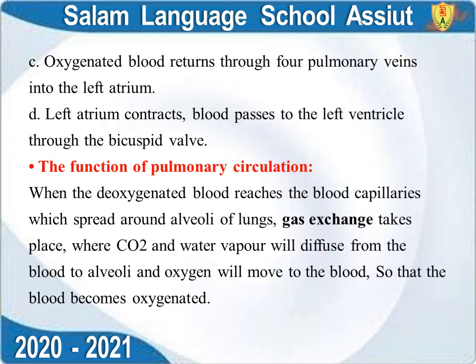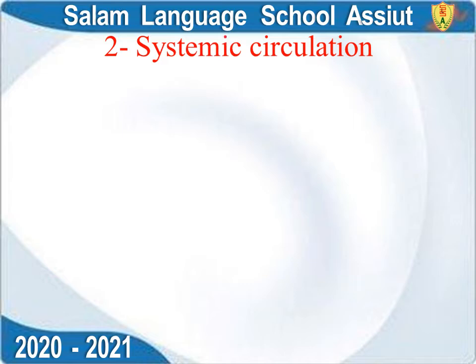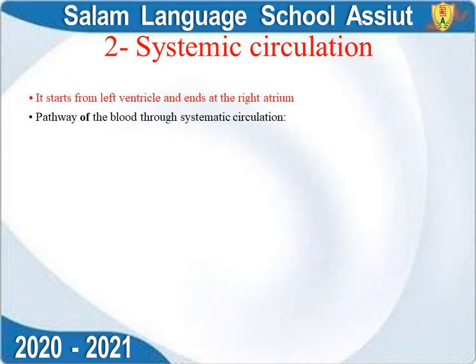Pulmonary circulation starts from the right ventricle and ends at the left atrium via the pulmonary veins. Number two: Systemic circulation, which starts from the left ventricle.